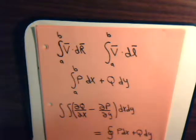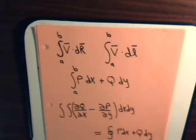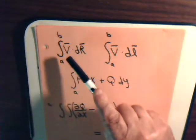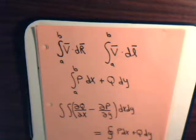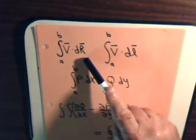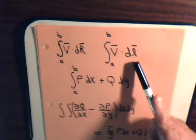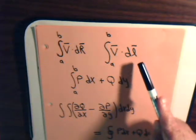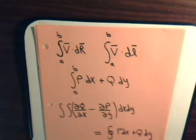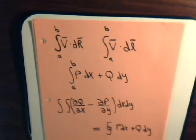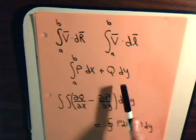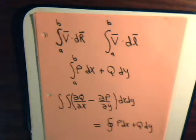Earlier in our series on vector analysis, we introduced the line integral and worked four or five examples of line integral problems. The general expression was a vector d dot dr, where r was the position vector — or sometimes expressed as v dot dl, where l is the differential line segment. Another form was p dx plus q dy.